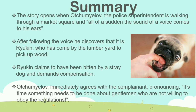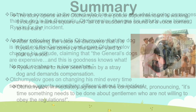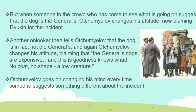Ocha Mylov immediately agrees with the complaint, saying it's time something was done about people not willing to obey regulations. But when someone in the crowd suggests the dog belongs to the general, Ocha Mylov changes his attitude and starts blaming Ryukin instead. Another onlooker then says the dog is in fact not the general's, and again Ocha Mylov changes his attitude, calling it a low creature with no coat and no shape. He keeps changing his mind every time someone suggests something different, making the whole scenario comic and interesting.